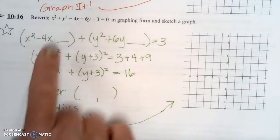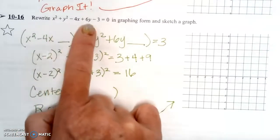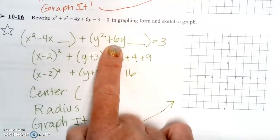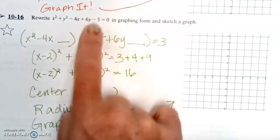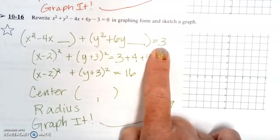So we're going to group the x terms together, so the x² minus the 4x here. Then we're going to group the y terms together, the y² plus the 6y, group them together. And then we're going to take this -3 and move it over to the other side to get positive 3.